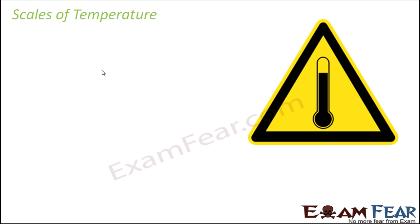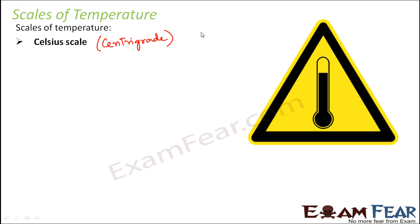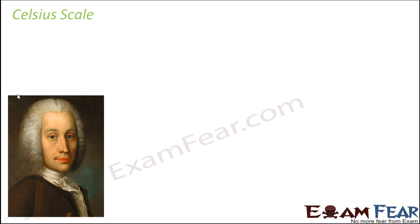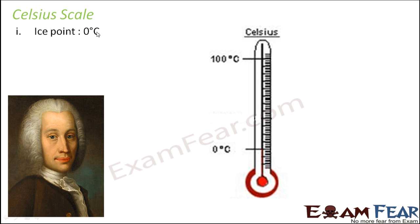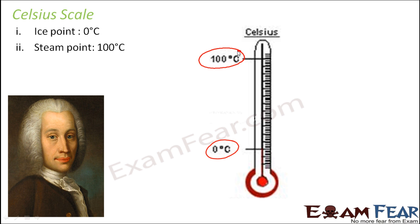The first scale is the Celsius scale, also known as the centigrade scale — centigrade and Celsius refer to the same scale, denoted as degree Celsius. In this scale, the ice point is at 0 degrees and the steam point is at 100 degrees Celsius. We often read temperatures like 30 degrees as 30 degree Celsius or 30 degree centigrade — they both mean the same. The ice point and steam point are the two reference points for all scales of temperature.